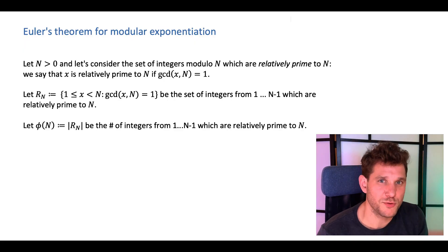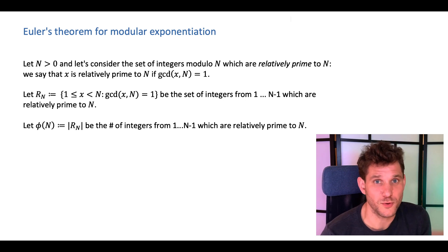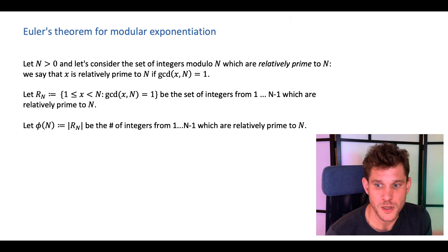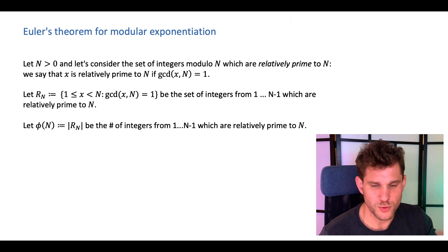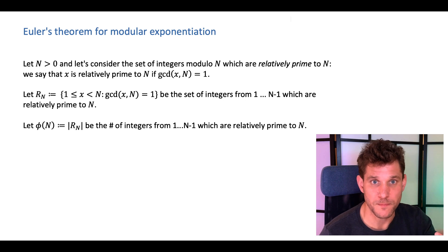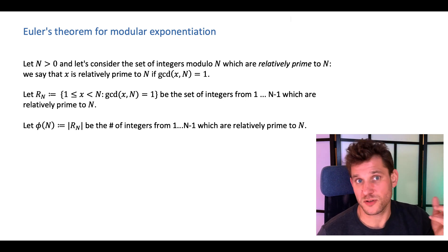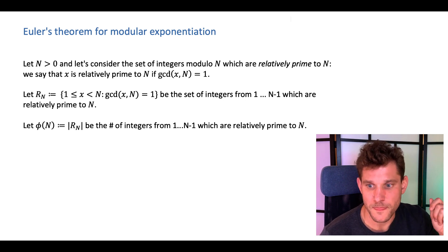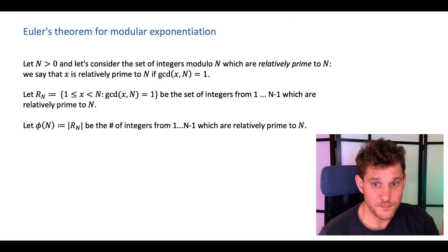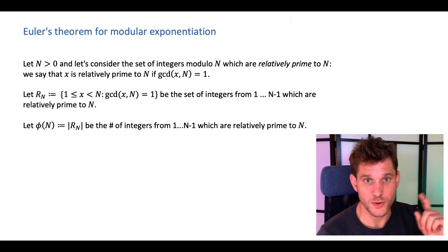Now we're going to prove something which is a little bit technical but incredibly useful and very relevant for RSA cryptography. We want to take a number n and consider all numbers x between 1 and n which are relatively prime to n — meaning the GCD of x and n is 1. We'll call this set R_n. Phi of n is just the size of R_n: the number of integers from 1 to n minus 1 that are relatively prime to n.